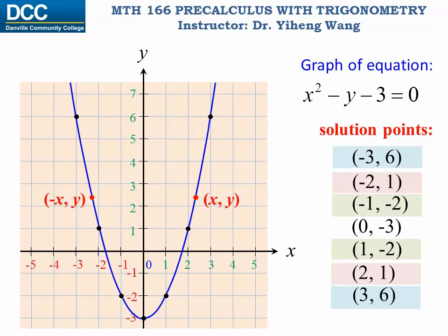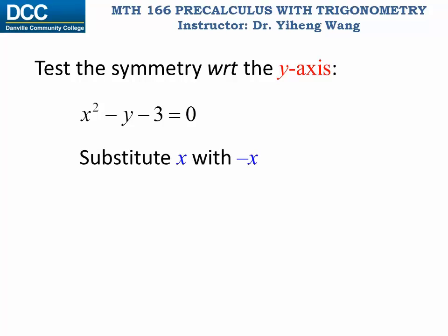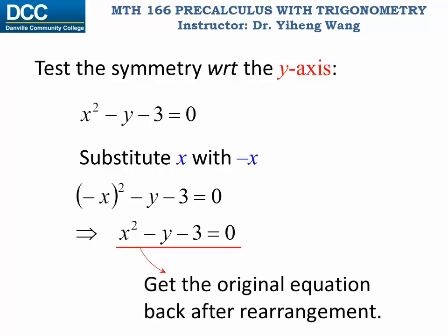This means that it doesn't matter if the x value is positive or negative — as long as they have the same absolute value, their corresponding y value is always the same. We can use this property to test if a graph of an equation is symmetric with respect to the y-axis. Since positive or negative x should correspond to the same y value, it shouldn't matter if we substitute x in the original equation with negative x. After rearrangement we should get the same equation back, and that indicates symmetry about the y-axis.